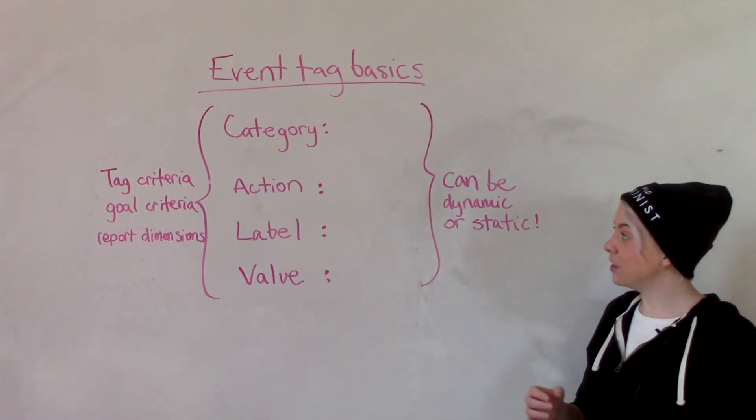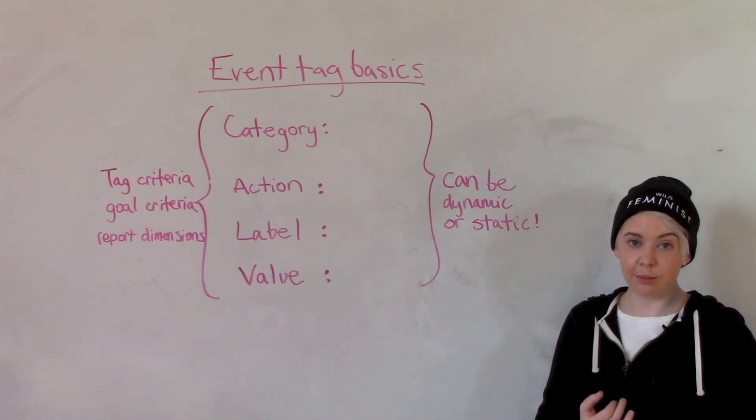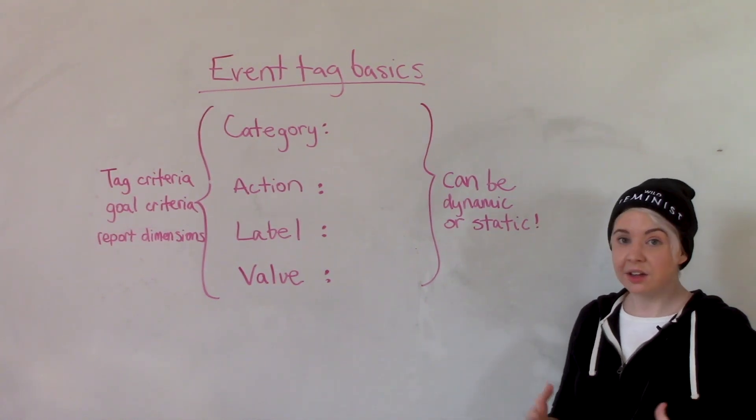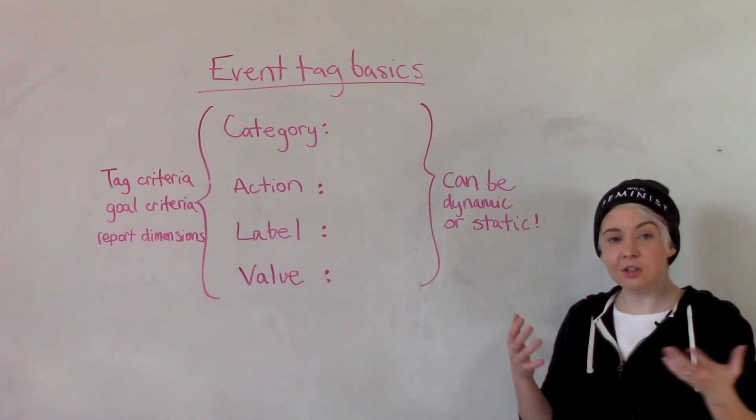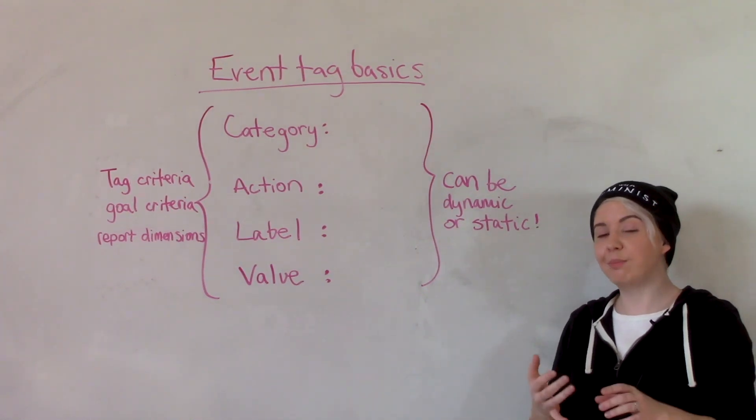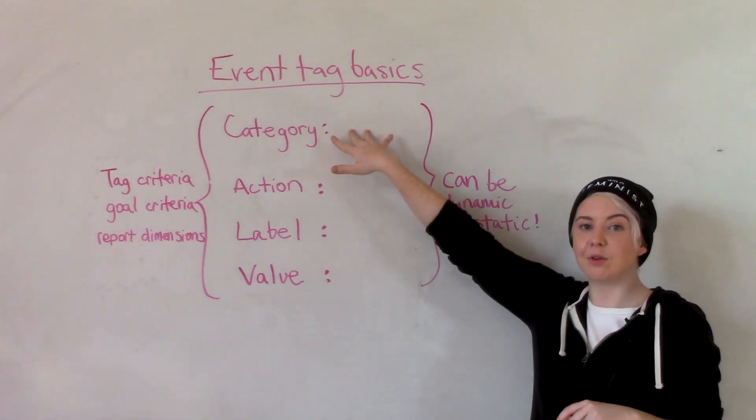The first thing that you want to do is go through and make a list of all the events on your site that you'd like to know about. Once you get there, let's use an example of an e-commerce site. Once you've got that list in hand, then basically you just have to start by creating meaningful categories that all of those fit into.